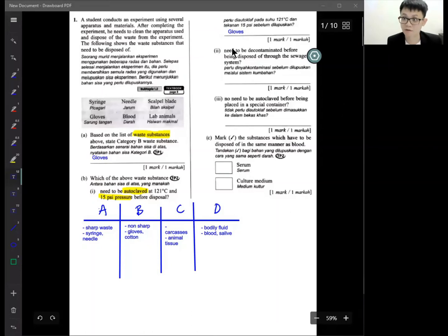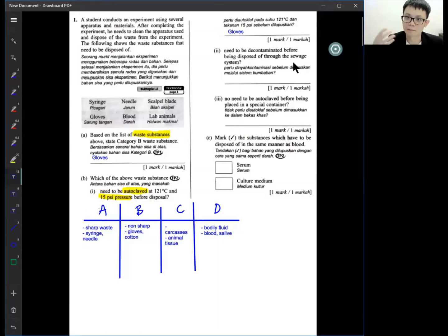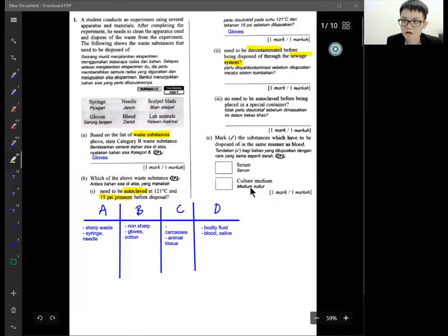Question number two: needs to be decontaminated before being disposed through the sewage system. The sewage is when you defecate, when you throw it into the toilet, that's called the sewage. Which one we want to decontaminate? When we read decontaminate, means we know that at least the thing is contaminated. Of course for sewage is the liquid, right? We don't throw solid things into the sewage. So we need to think, okay this is a sewage system, so we want to throw something not solid.